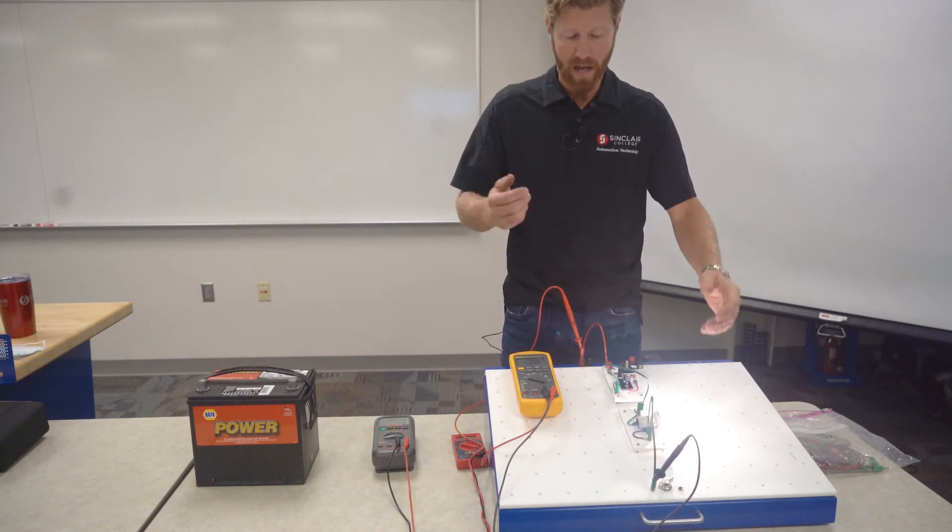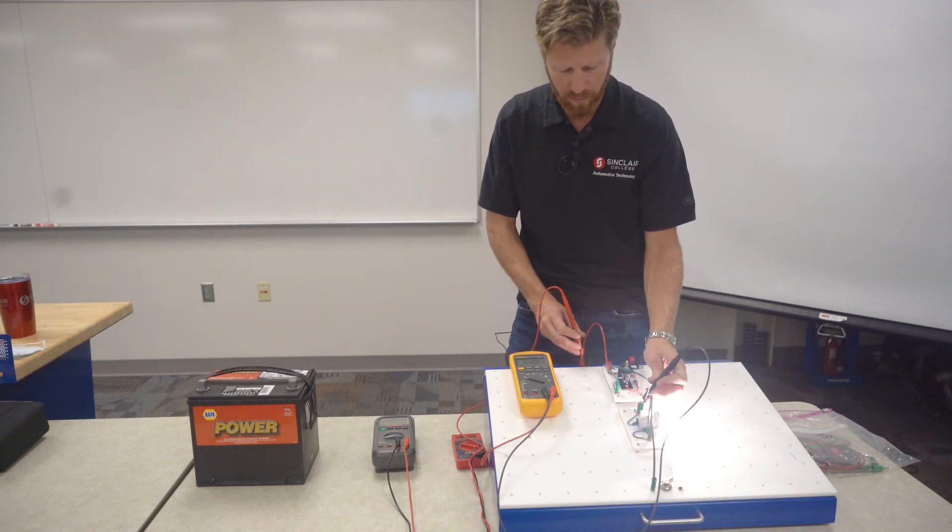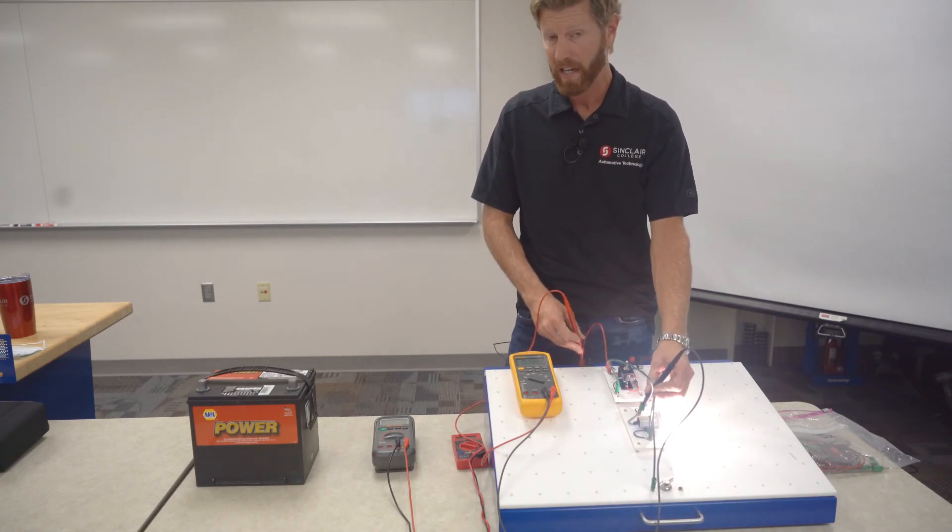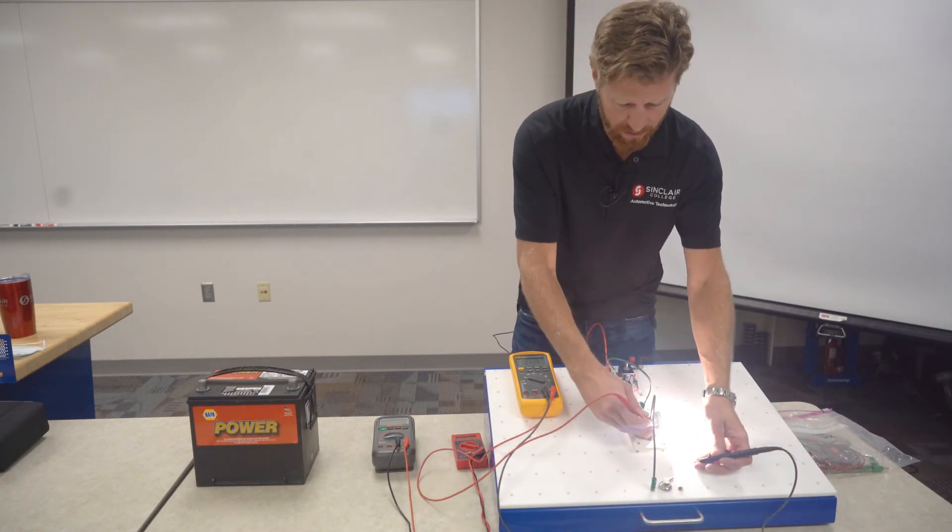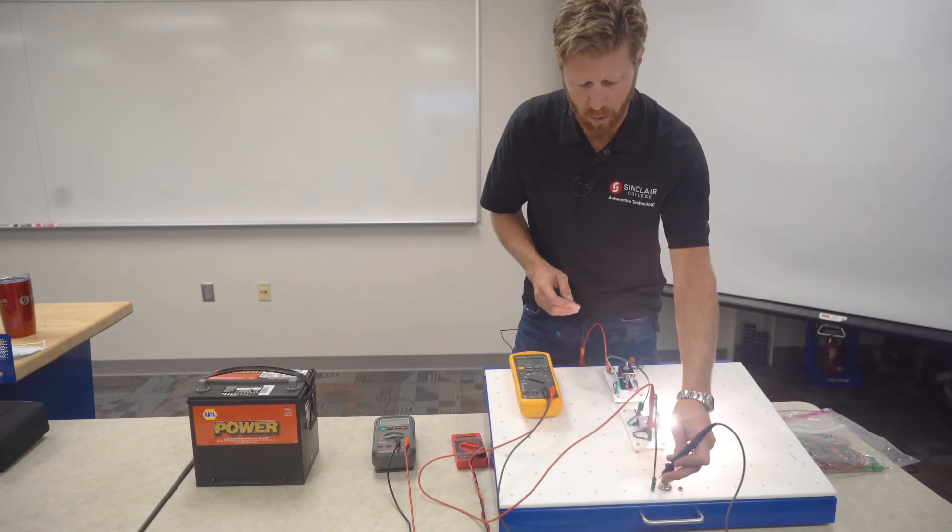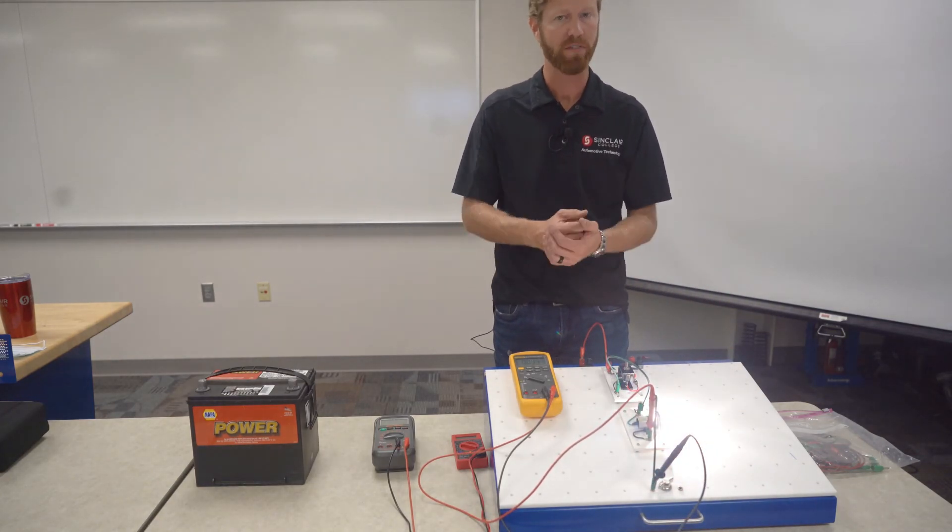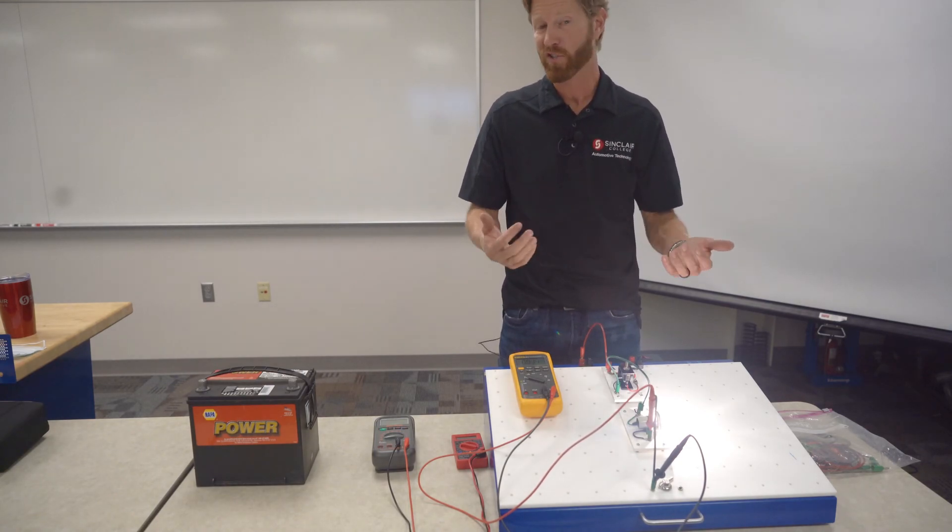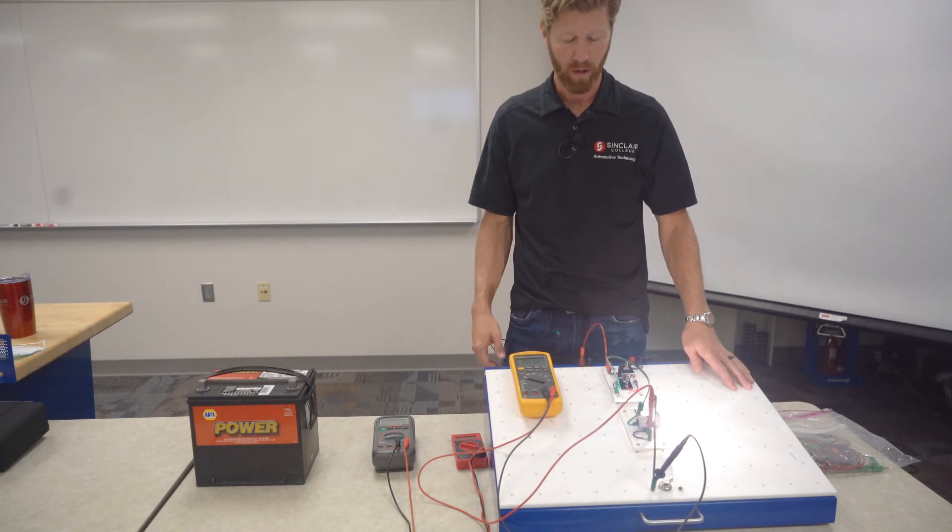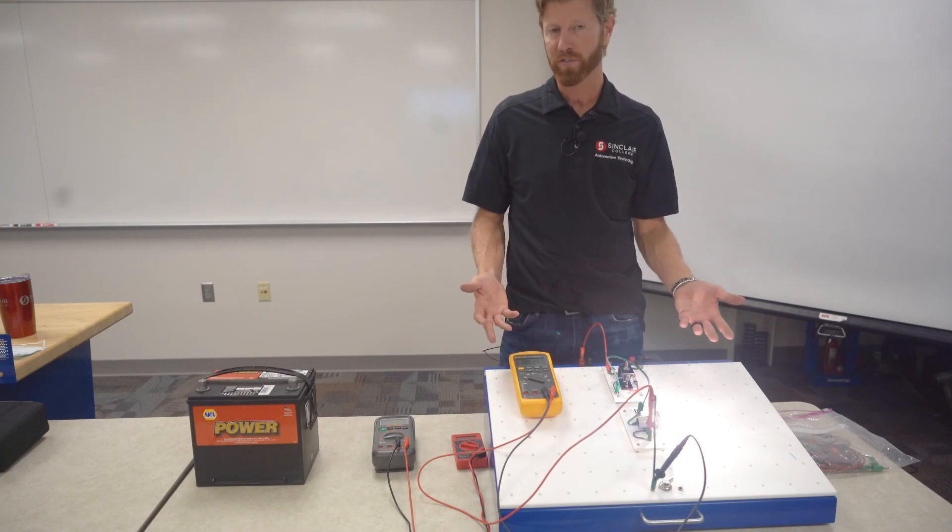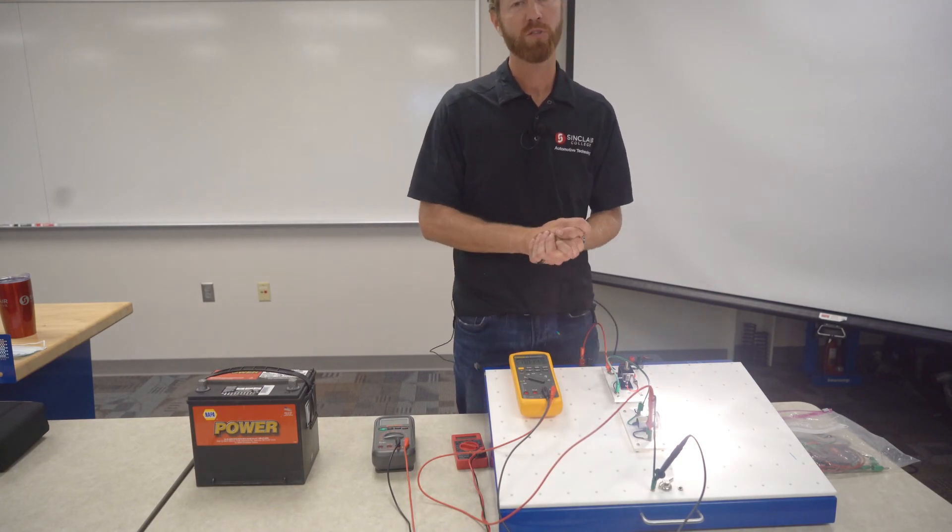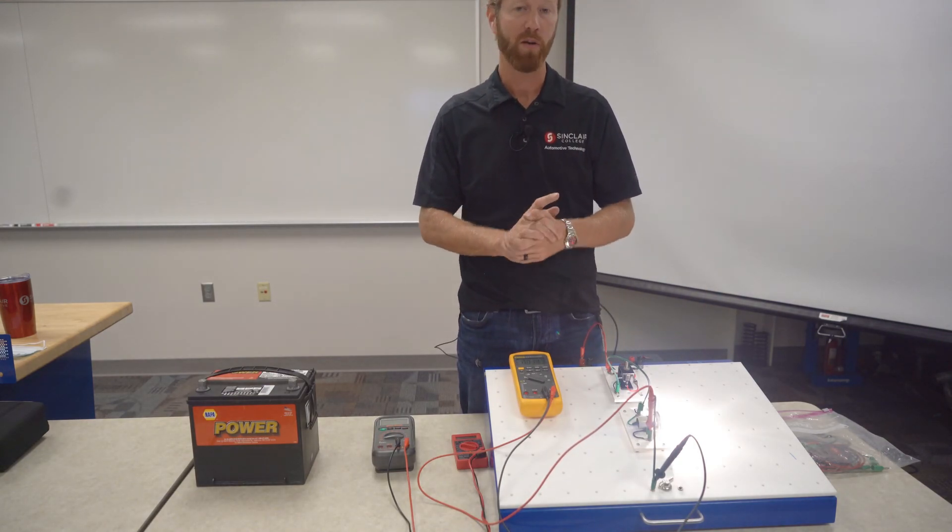But again, if we did, this is how you would measure it. This would be the feed side from the very beginning to the beginning of the first component, and then the ground side would be after the component all the way to the ground, wherever the circuit's grounded, or again you could use a chassis ground, a body ground, an engine ground, or even the battery. Okay, so that's how you measure voltage drop in the circuit. So thanks for watching, check out our other videos and we'll see you next time.